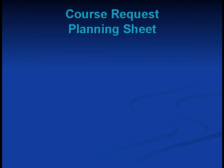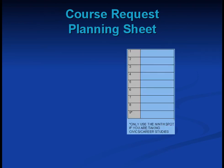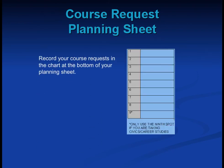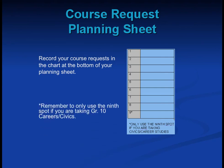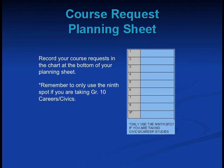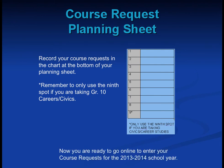Use your course request planning sheet before you go online. Record your course requests in the chart at the bottom of your planning sheet. Remember to only use the ninth spot if you are taking Grade 10 Careers in Civics. Now you are ready to go online to enter your course requests for the 2013-2014 school year.